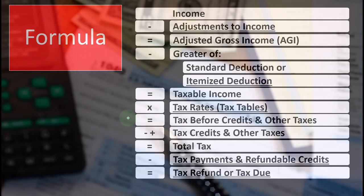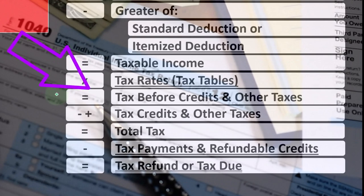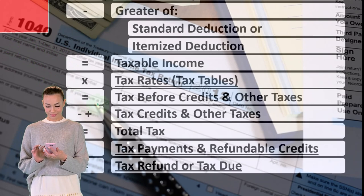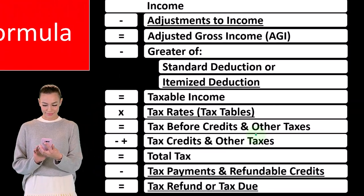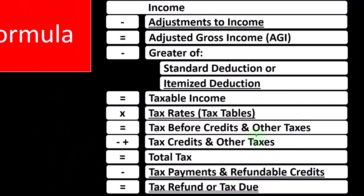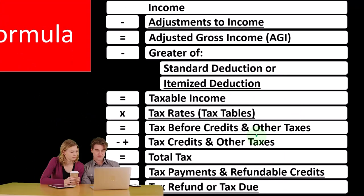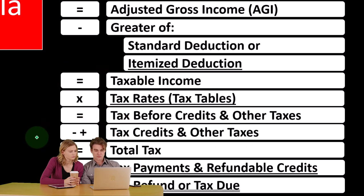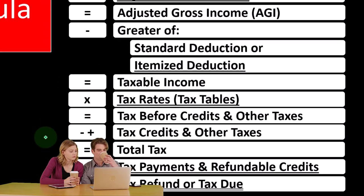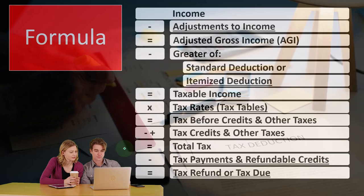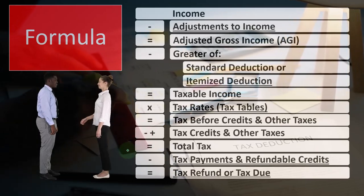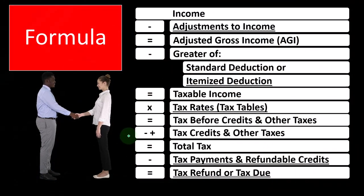You would think that would be the major stopping point, and then you would just compare that to how much you paid. But we have the added complexity of credits being different than deductions, and other taxes — such as self-employment taxes, which is a big one — piled on top of the income tax. So there will be a lot of action even after calculating the tax, because of the credits, other taxes, and other tax credits. That gives us the total tax. Then we have payments — including W-2 withholdings, estimated payments, and refundable credits — getting us to our tax refund or tax due.